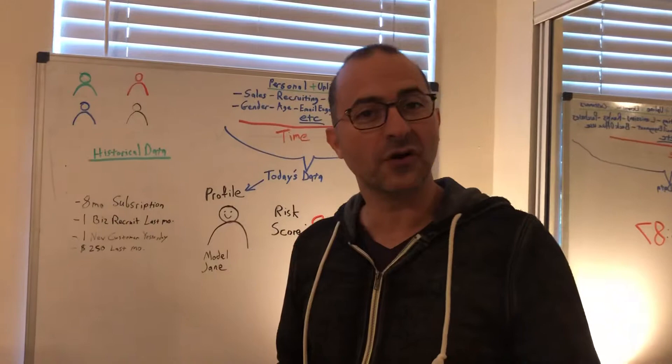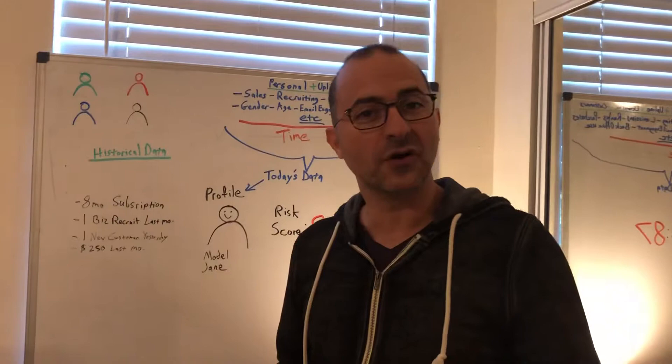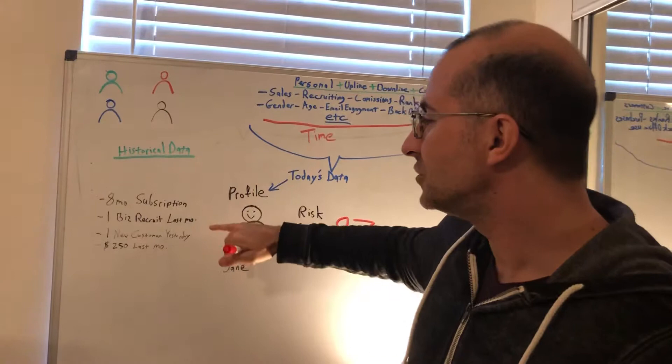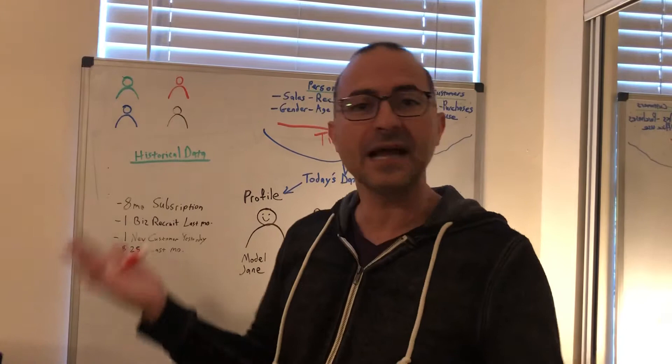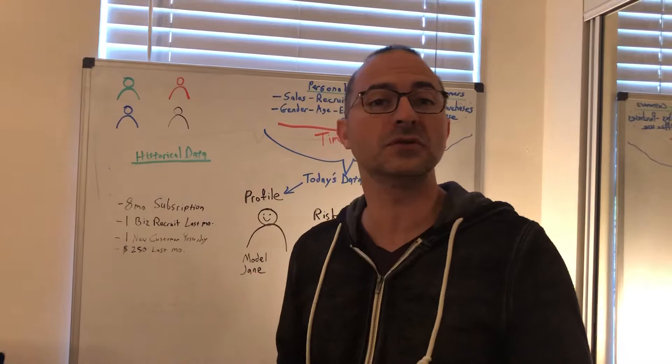Let's imagine we've got model Jane. Jane is a model distributor of yours. She's been on an autoship subscription for the last eight months, recruited a new business recruit last month, added a new customer yesterday, and made $250 last month. I would consider her to be a standard person doing really well. Based on her key metrics, there's no reason to assume Jane is going anywhere, right?